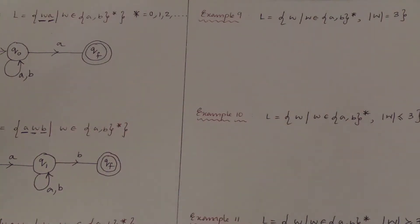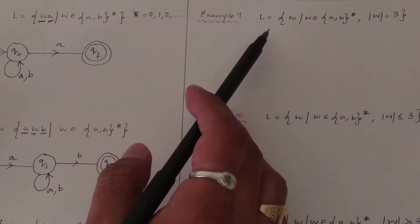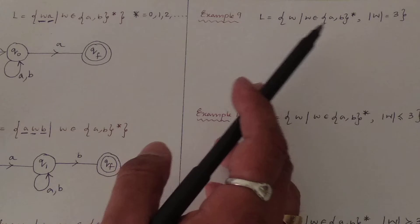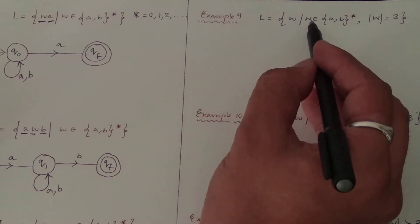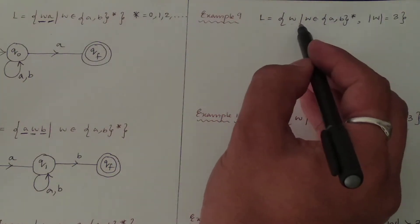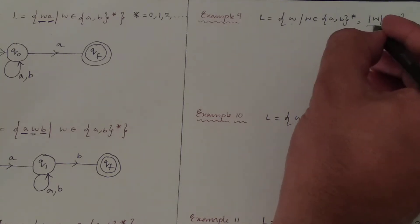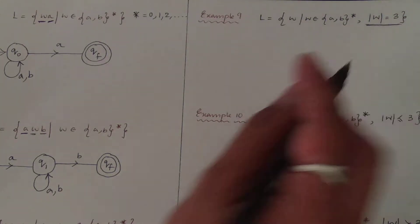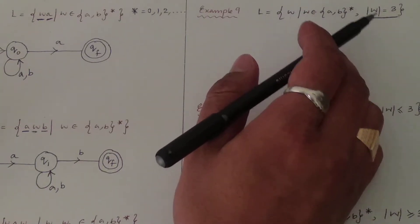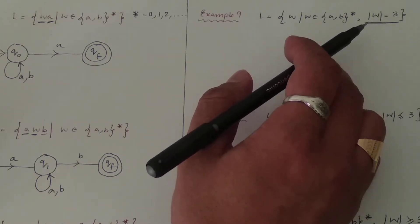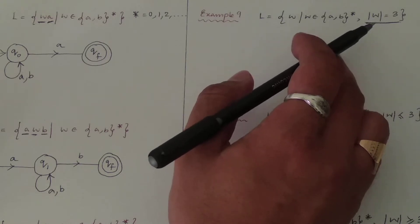We will be looking at the length of a particular string. Length-based questions will appear in this format. The language is defined as: w where w belongs to {a, b}* and the main condition is mod of w equals 3. Mod of w equals 3 means the length of a particular string — this is a concept we learned in the first few lectures.